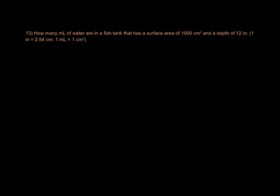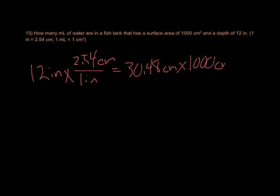How many milliliters of water are there in a fish tank with a given surface area and depth? Really, the only thing you have to convert here is the depth in inches to centimeters, and then cubic centimeters to milliliters, which is the same value. So I just converted the inches to centimeters, 2.54 centimeters per inch, which gives us a depth of 30.48 centimeters times the area of 1,000 square centimeters, which gives us 30,480 cubic centimeters.